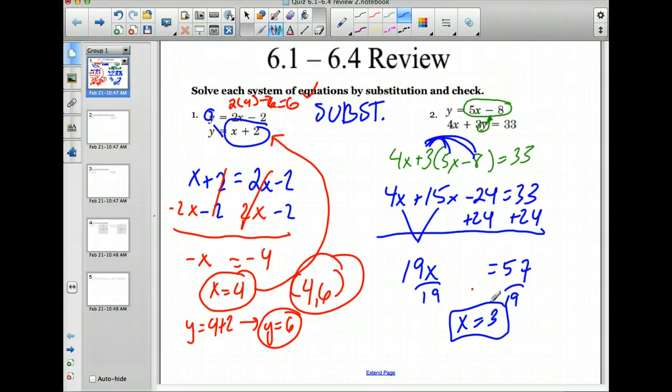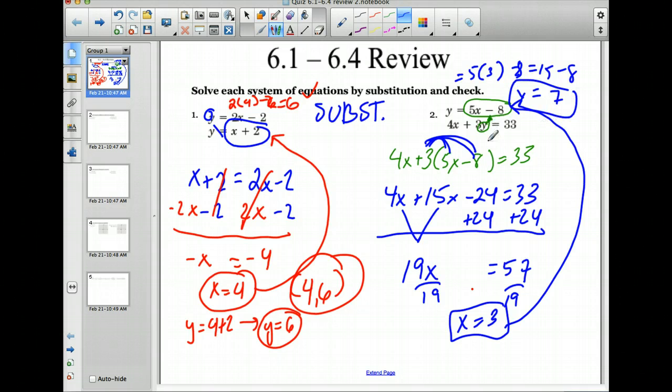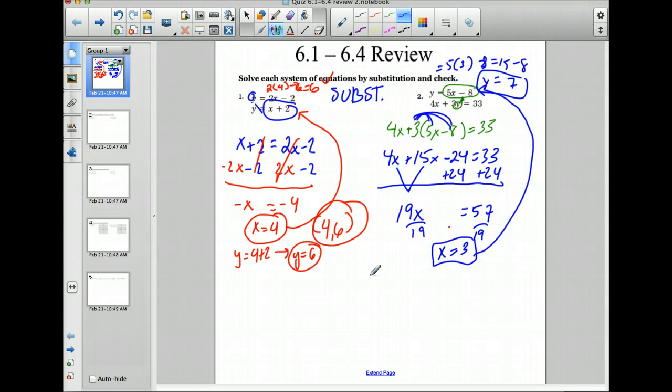So then we plug that into either one. It's easier to plug it into the top one because y is already solved for. So we have y equals 5 times x, which is 3, minus 8, which gives us 15 minus 8, which gives us a 7. So y equals 7. Check that in your other equation. So it gives us 4 times the x plus 3 times the y equals 12 plus 21 equals 33. So it works. We did it right.